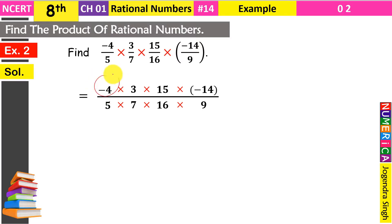First of all हमने choose किया numerator में minus 4 और denominator में 16। याद रखने की बात: numerator केवल denominator से ही cut होगा, numerators आपस में कभी cut नहीं हो सकते — वो आपस में केवल multiply करेंगे। Minus 4 और 16 दोनों 4 से divide होते हैं। Minus 4 को 4 से divide किया → minus 1 मिला। 16 को 4 से divide किया → 4 मिला।